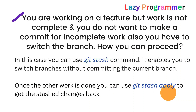The second scenario: suppose you are working on a feature but the work is not complete, and you don't want to commit incomplete work. However, you also need to switch branches to start working on another feature. One option is to switch directly, but all your current changes would be lost. Instead, you can use the git stash command, which lets you switch branches without committing — your changes remain on the current branch without a commit. Once done with the other feature, you can return to your previous branch and run 'git stash apply' to restore all the stashed changes, so you don't have to start from the beginning again.